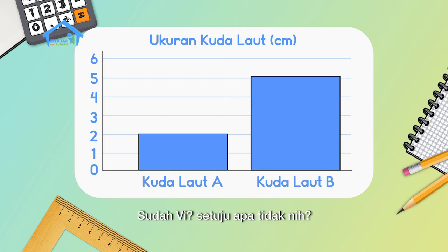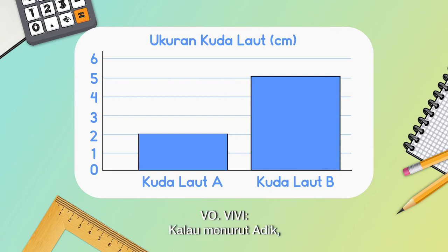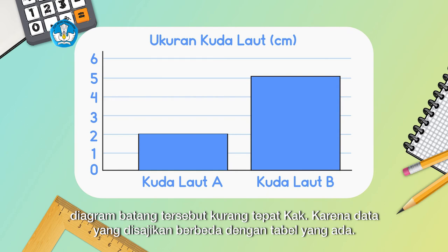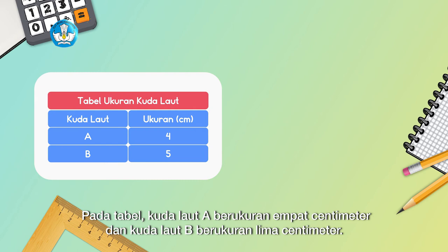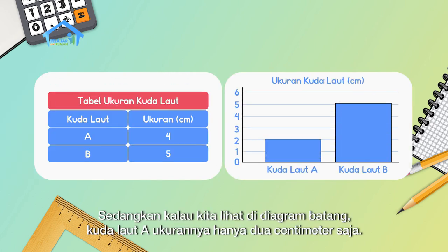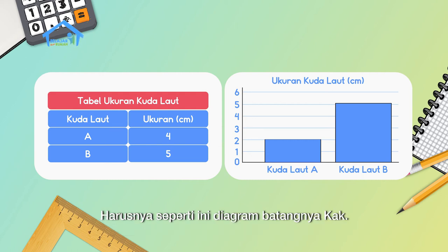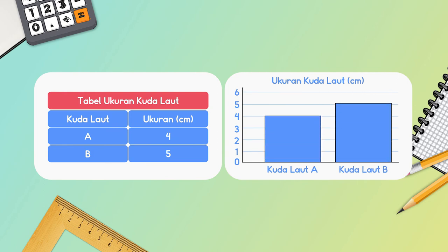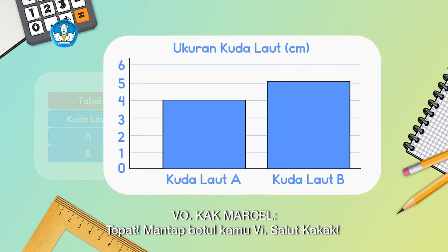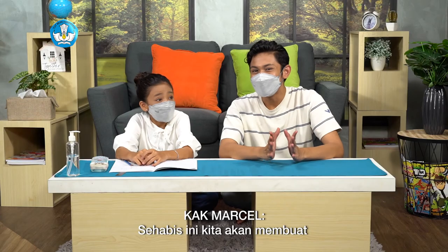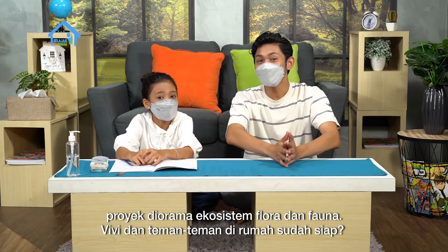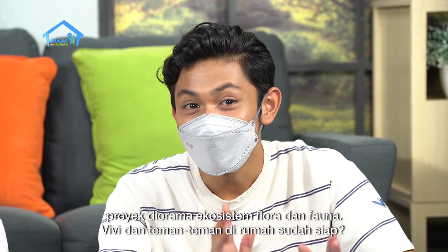Done, Fi — do you agree or not? According to me, the bar diagram is not quite right, because the data presented is different from the table. In the table, seahorse A is 4 cm and seahorse B is 5 cm. But in the bar diagram, seahorse A is only 2 cm. The correct diagram should look like this. Is that right, Kak? Exactly right — well done, Fi! After this, we will make the diorama ecosystem project. Fifi and friends at home, are you ready?